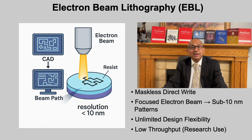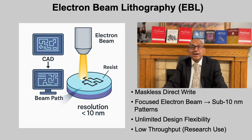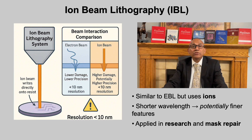Electron beam lithography eliminates masks altogether. A finely focused electron beam scans across an electron-sensitive resist according to a computer-generated pattern. Because electron wavelengths at tens of kilo-electron-volts are extremely small, EBL achieves sub-10 nanometer resolution, making it invaluable for quantum devices, nanowires and nanophotonic components. The flexibility of design allows any arbitrary geometry. However, EBL is slow and expensive since it writes point by point, limiting its use to research and low-volume prototyping rather than mass production.